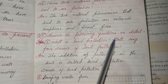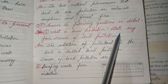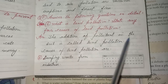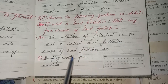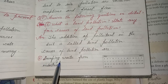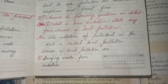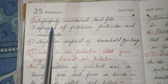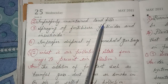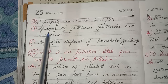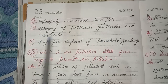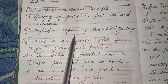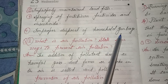Answer the following questions in detail. First, what is land pollution? State any four causes of land pollution. Answer: The addition of pollutants in the soil is called land pollution. Causes include: improperly maintained landfills; spraying of fertilizers, pesticides and insecticides; and improper disposal of household garbage.